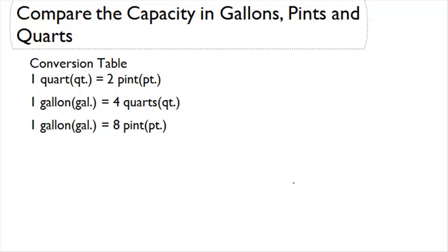One quart is equal to two pints. One gallon is equal to four quarts. Since there are two pints in each quart and four quarts in each gallon, one gallon is equal to eight pints.